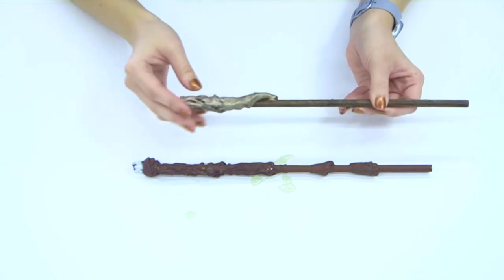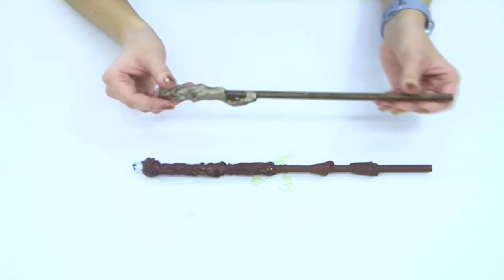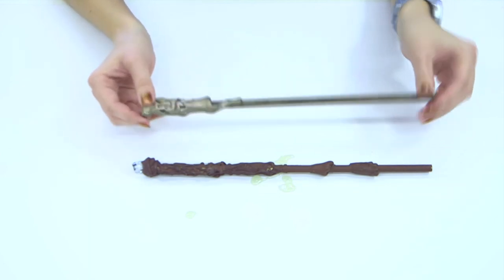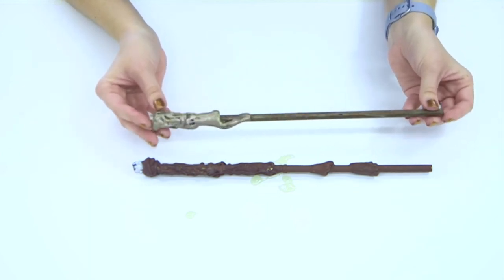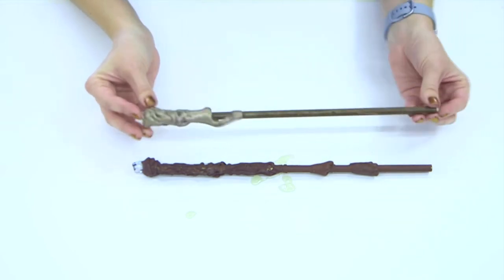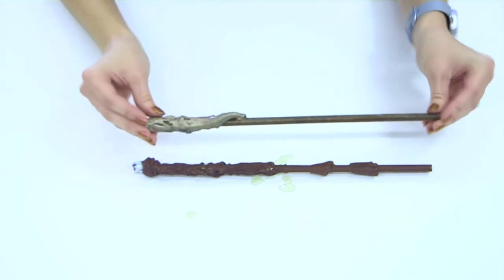And then this one looks like it was sprayed with a shiny glossy spray paint can so you can do that but you don't have to. If you want it to look a little bit more rustic you can leave it the matte coloring and that is everything you need to know to make your own Harry Potter wand.